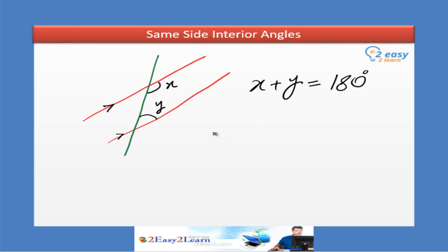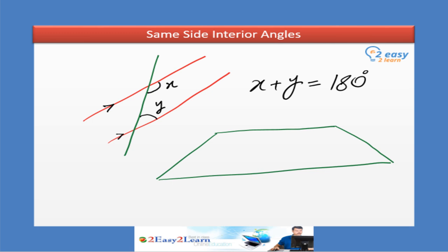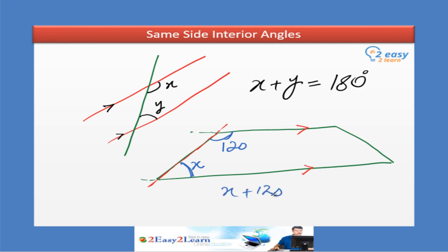What is the application of this concept? We have a trapezium where these two lines are parallel and these two are non-parallel. We can consider the non-parallel side as a transversal. These two are interior angles of the trapezium. If this angle is 120 degrees, we can find X because these two lines are parallel and interior angles of parallel lines are supplementary. So X plus 120 equals 180, giving us 180 minus 120, so X equals 60 degrees.